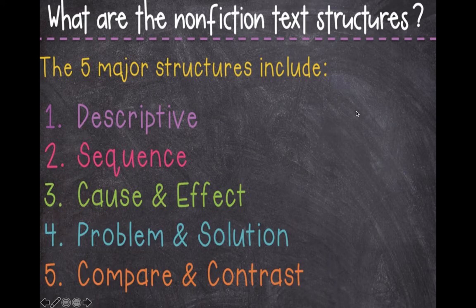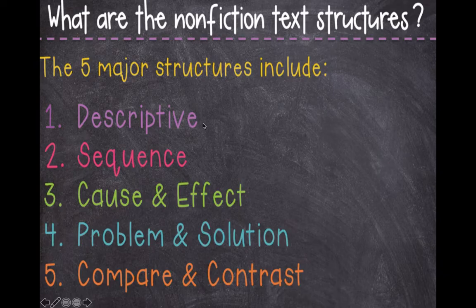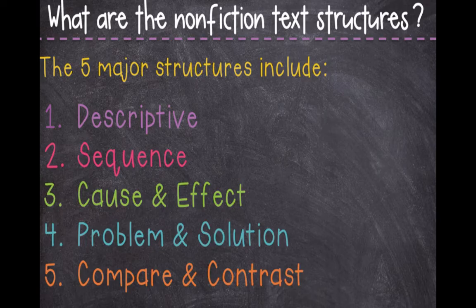So just to review, there are five different text structures used in nonfiction texts. The author can decide to use one or more of them depending on the information they want to give: descriptive, where they describe features and characteristics; sequence, putting events or steps in order; cause and effect, where something happens because of something else; problem and solution; or compare and contrast. So when you're reading a nonfiction text, see if you can figure out which text structure the author is using.